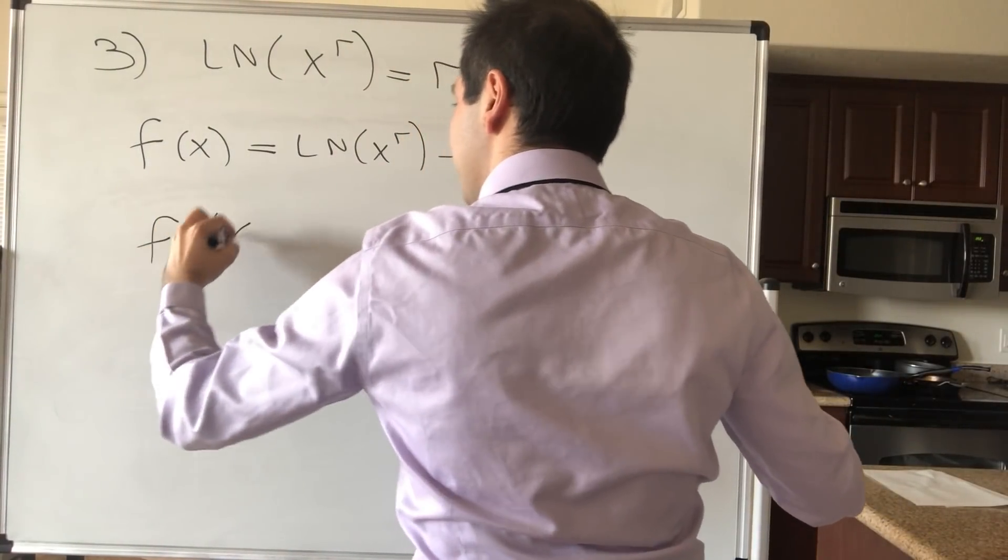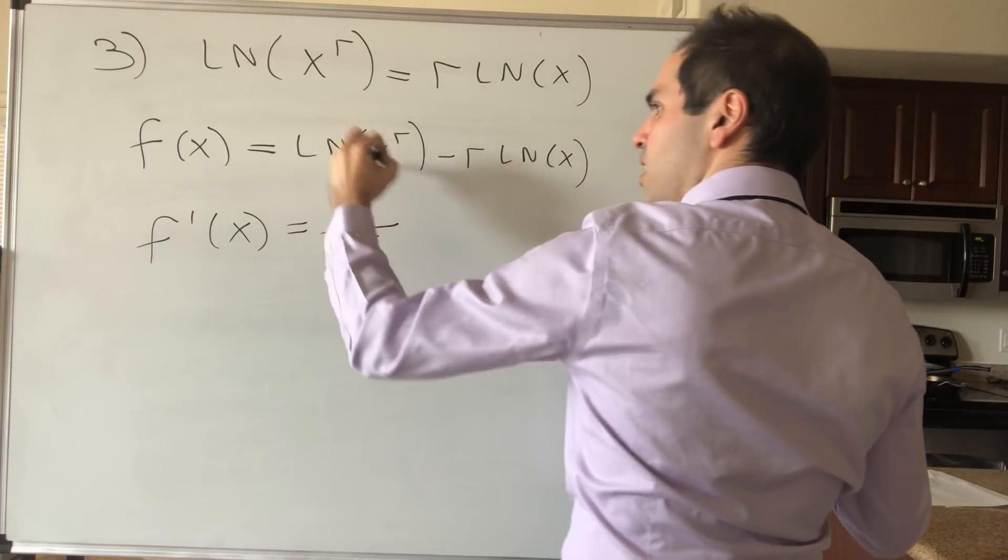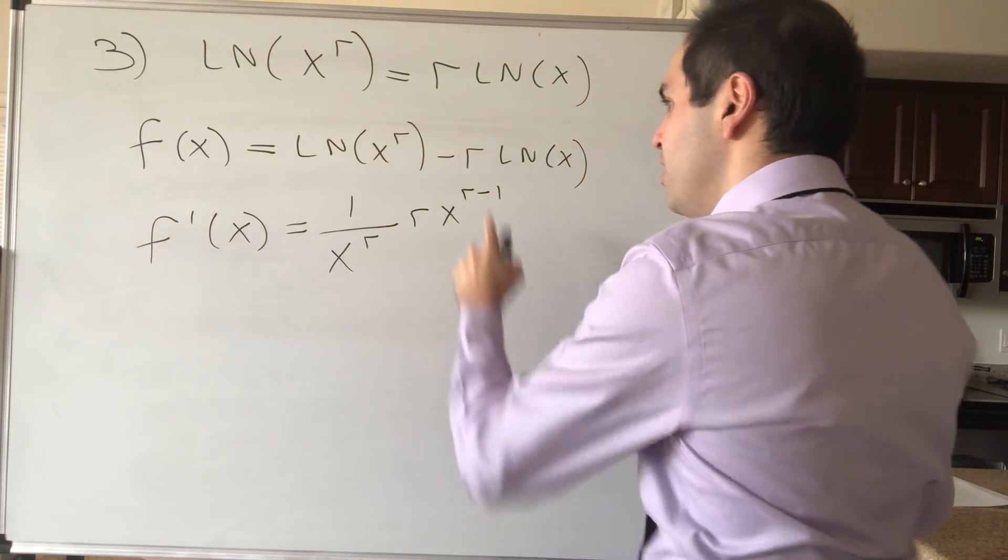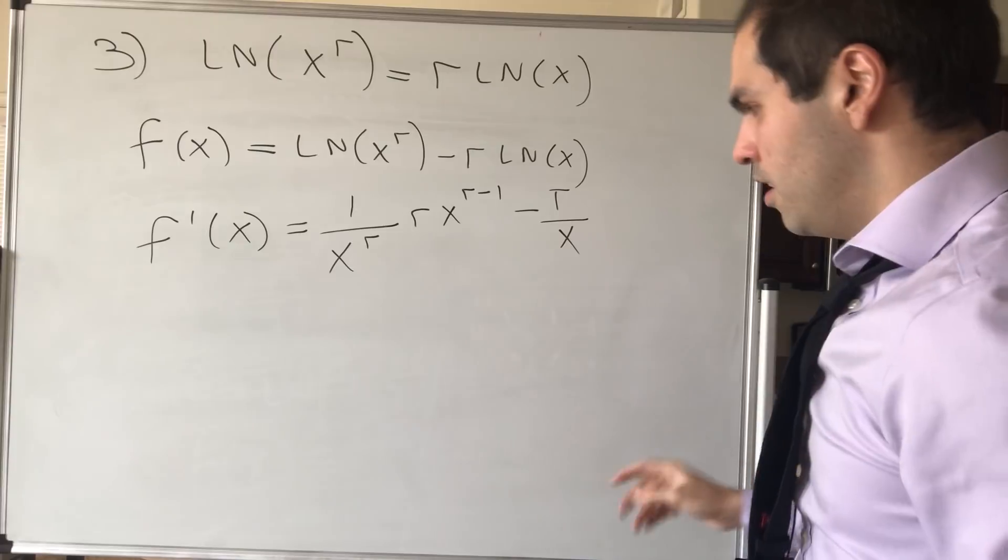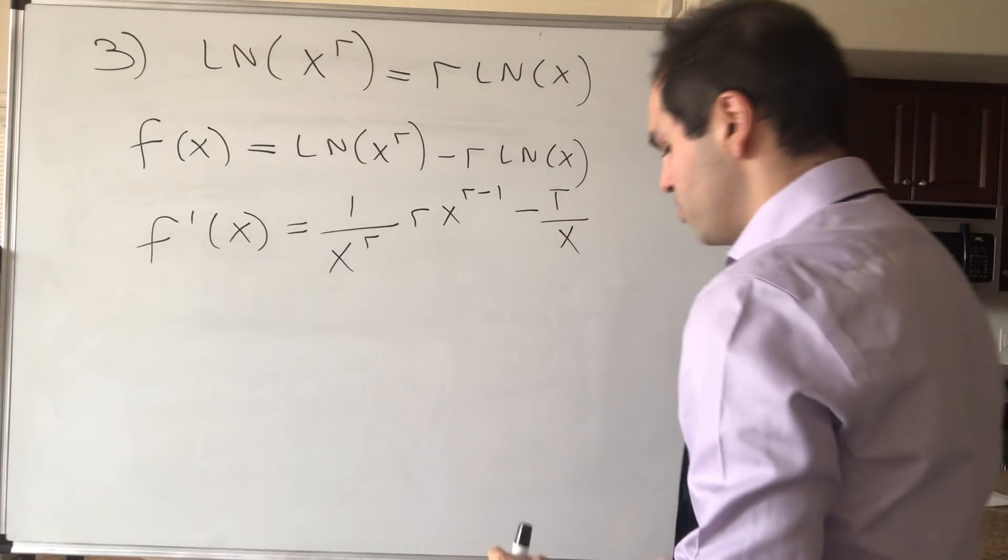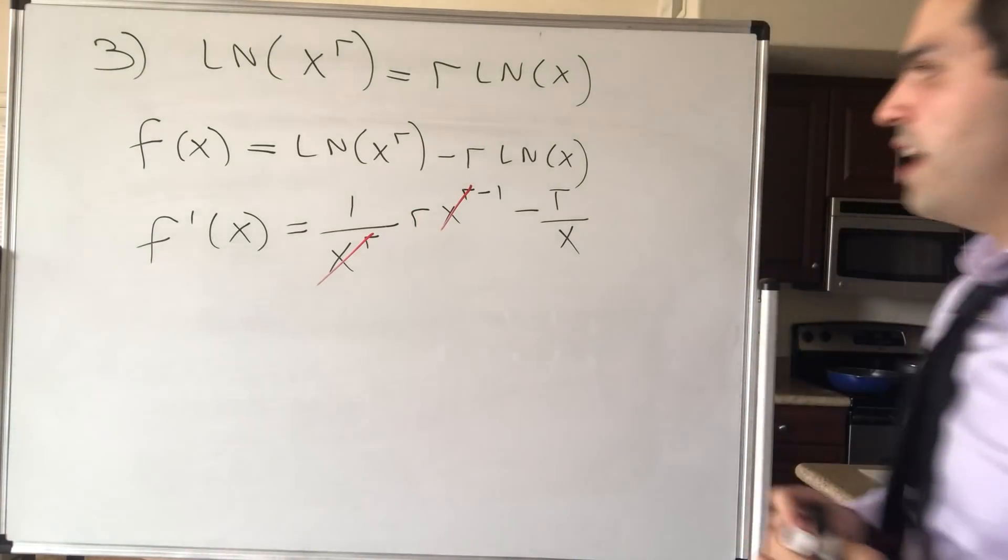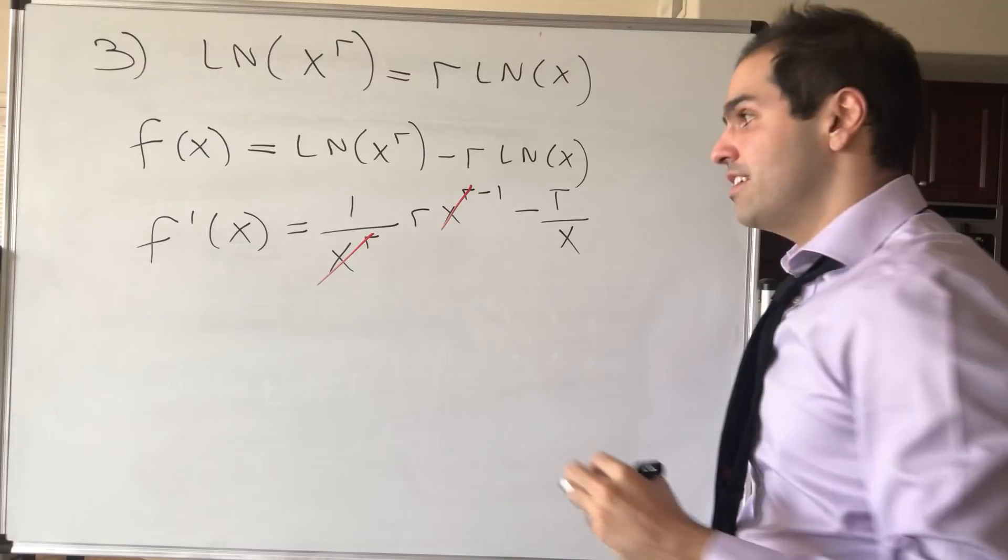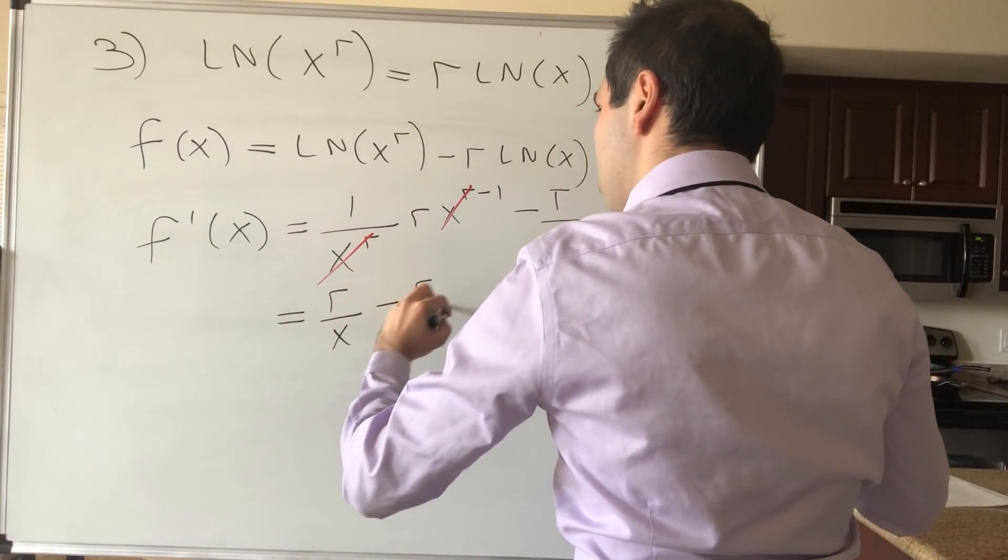So calculate f prime of x, that is 1 over x to the r times the derivative of this, so r x to the r minus 1, and then minus r over x. And let's see what this simplifies to, so this x to the r cancels out, and you're just left with r times x to the minus 1.